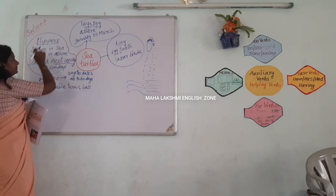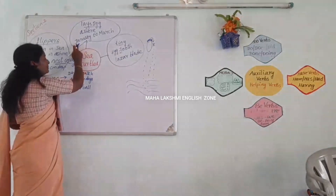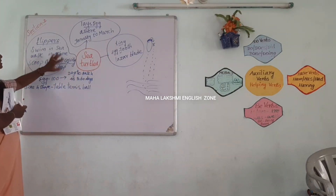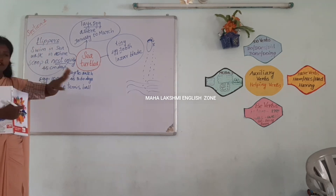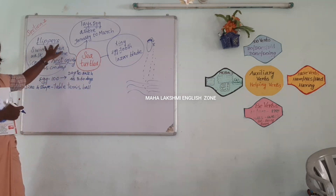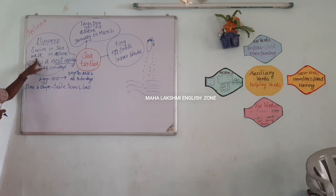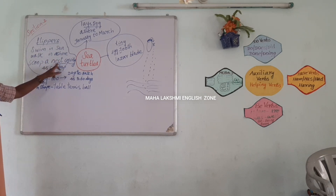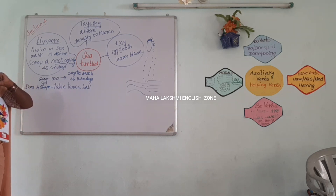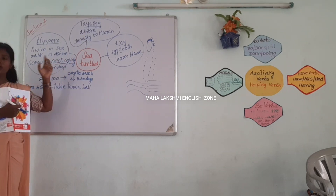Do you understand section 2? The sea turtle lays eggs on the ashore in January to March. A flipper is the front limb of the sea turtle. It uses flippers to swim in the sea, to walk on the ashore, and to scoop a nest cavity. The nest cavity is used for laying eggs.